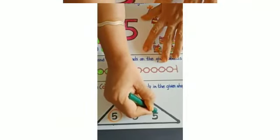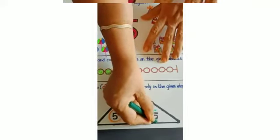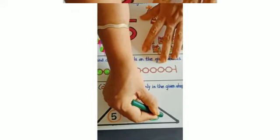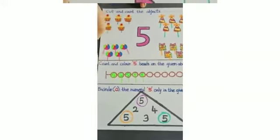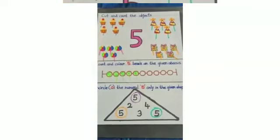And last, which number? Yes, number 5. So we will encircle on number 5 with thick crayon. Understood children? I hope it is clear for you. And practice with your parents.